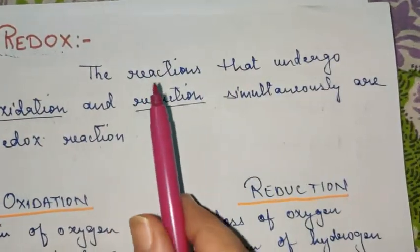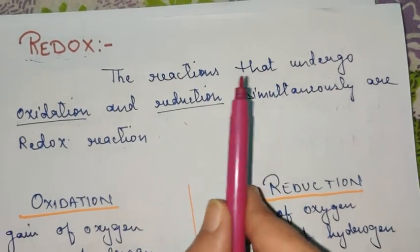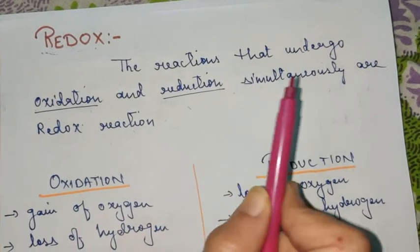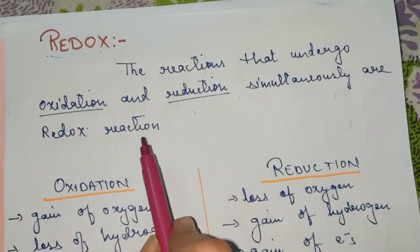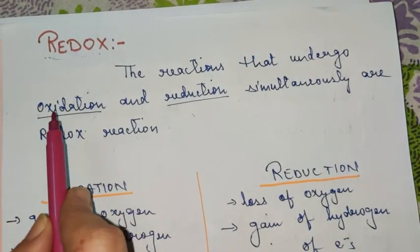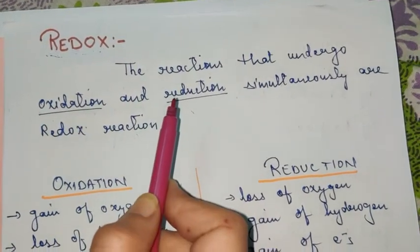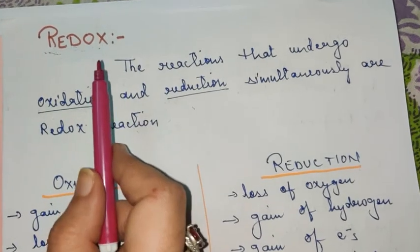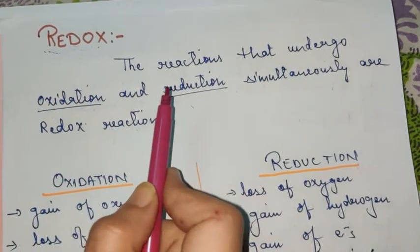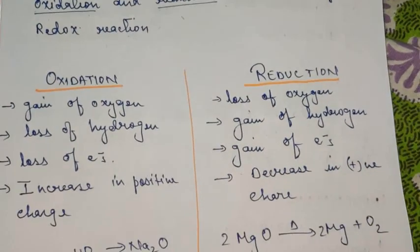What is a redox reaction? A reaction that undergoes both oxidation and reduction simultaneously is referred to as a redox reaction. A reaction in which oxidation and reduction both occur at the same time is known as a redox reaction. These two terms are new to you, so we will understand them in detail.